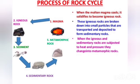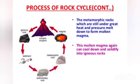Metamorphic rocks, which are still under great heat and pressure, melt down to form molten magma again. This molten magma again cools down and solidifies into igneous rocks. So this was all about the rock cycle — one rock changes its formation and it makes the rock cycle complete.